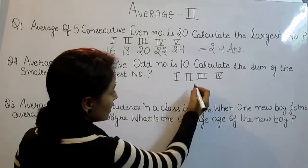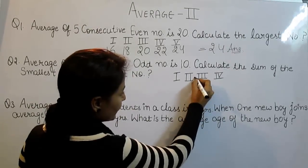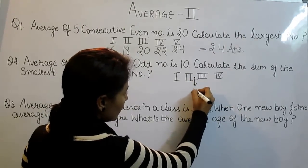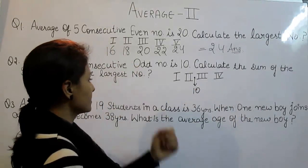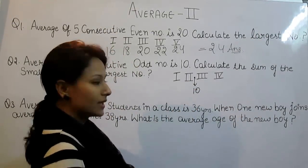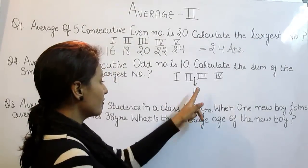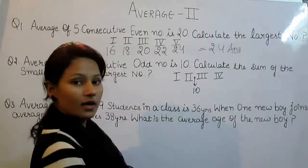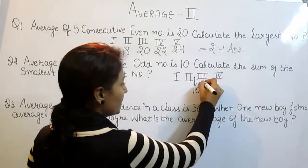Which one is the average? This point is the average and it is given as 10. We have to get the odd numbers now. But the average given is an even number. After 10, which number is the odd one? That would be 11.